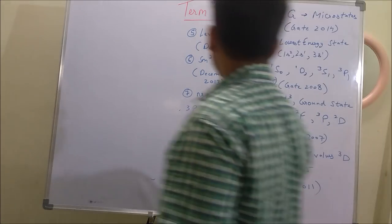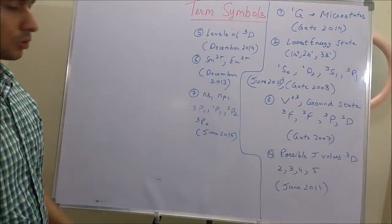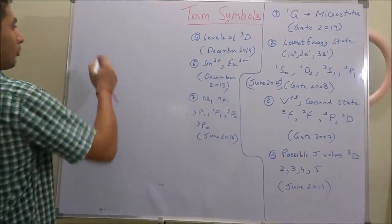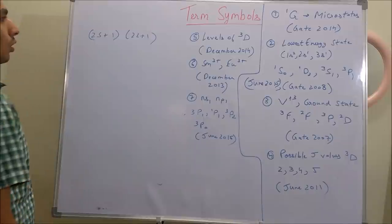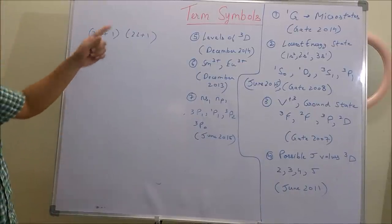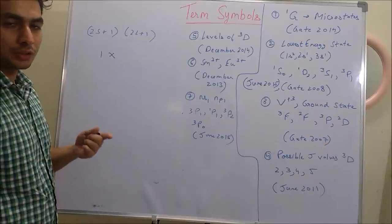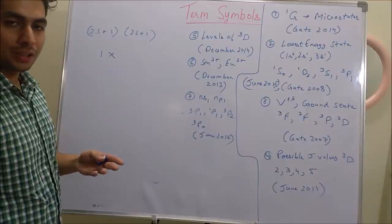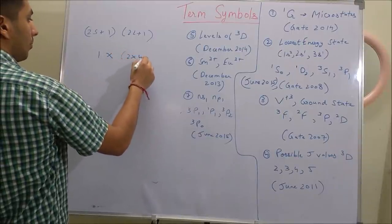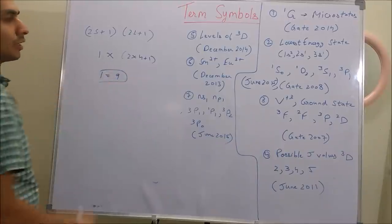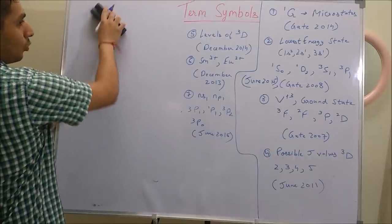Question from GATE 2014: given the term 1G, find the number of microstates. Using the formula (2S+1)(2L+1): multiplicity = 1, and for G, L = 4 (S=0, P=1, D=2, F=3, G=4). So microstates = 1 × (2×4+1) = 1 × 9 = 9. The number of possible microstates is 9. This was a two-mark question in GATE 2014 and takes about five seconds to solve.